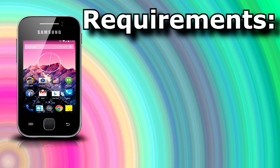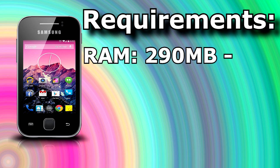Let's start off with reason number one: the requirements. Even though there is not an official list of hardware requirements for Android 4.4 KitKat, we did get some clues about the required RAM. We were told that it has improved performance and could even run on devices with just 512 MB of RAM released up to three years ago. Note: 512 MB of RAM, not 290 MB, which is what the Galaxy Y has.